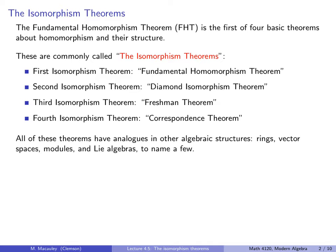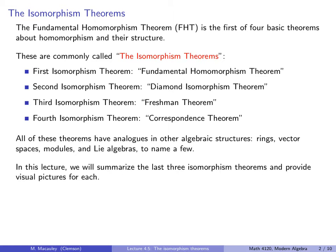The first isomorphism theorem is what we called the fundamental homomorphism theorem. The second isomorphism theorem is sometimes called the diamond isomorphism theorem. The third isomorphism theorem is sometimes called the freshman theorem, and the fourth isomorphism theorem is sometimes called the correspondence theorem or the lattice isomorphism theorem. All of these theorems have analogs in other algebraic structures such as rings, vector spaces, modules, and Lie algebras, just to name a few.